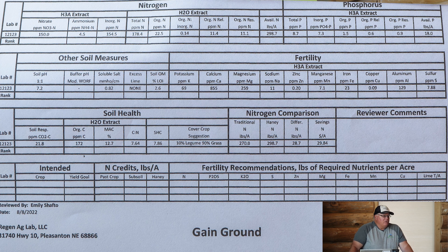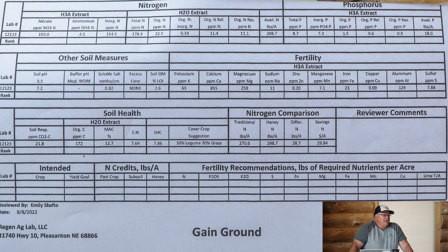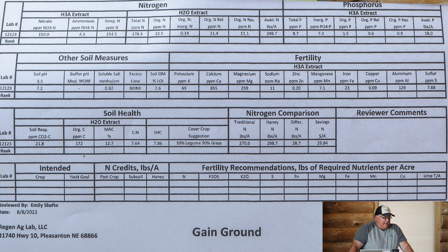We do it in their context, what they're comfortable with — and that varies from person to person. Some people will only try it in a test strip; others will split the field in half. We always prefer a zero check strip also, just to show people and to document how their soils advance.